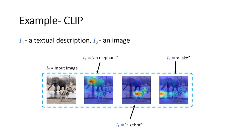To better understand the definition, let's look at an example with a CLIP model. The CLIP model takes two inputs: a textual description and an image. In this case, the input image is one of an elephant and a zebra standing by the lake. Given any textual description, our method should be able to output a heatmap of the pixels which correspond to that textual description. For example, if the textual description is 'elephant,' the heatmap corresponds to the elephant; if 'zebra,' it corresponds to the zebra; and if 'lake,' it corresponds to the lake.